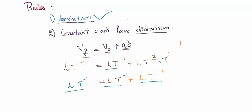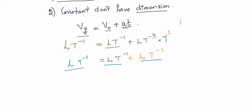So all three terms — v, v₀, and at — have the dimension L·T⁻¹, and consistency is maintained. This illustrates what consistency means: every term in the equation must share the same dimension. You cannot add two different dimensions together. For example, adding length to mass makes no sense. If you find that situation, something is wrong with the formula.